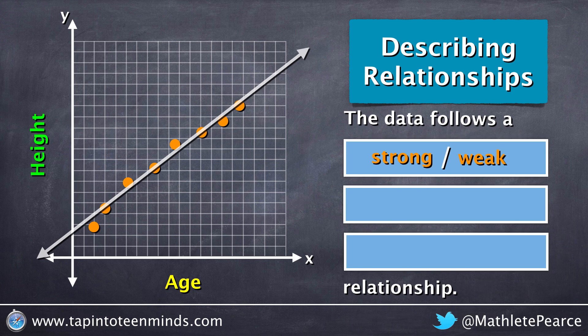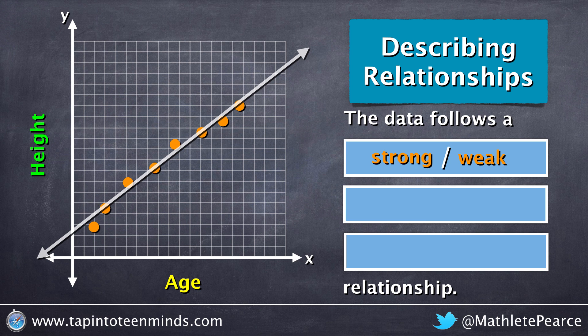We would then look to see whether the data has a strong or weak relationship. In this case, we can see it's pretty tight to the line of best fit, so that would indicate a strong relationship.